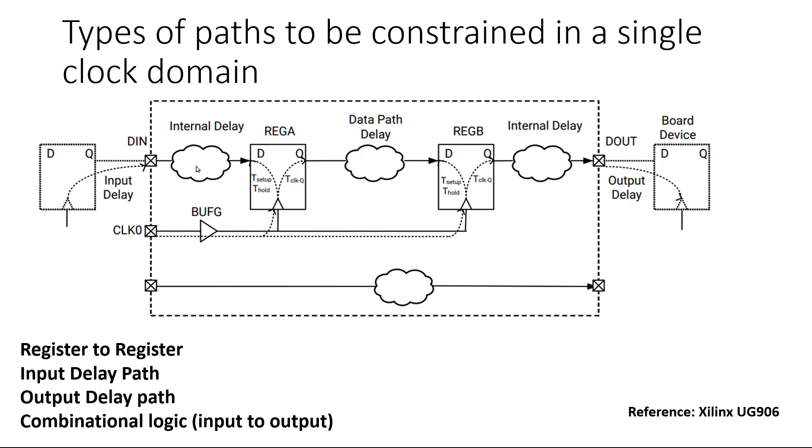Now let us discuss the third type of path that we need to constrain: output delay path. In output delay path, our design gives output to the external world. In this case I have shown only one output D out. It is the output of this flip-flop, let's name it as reg1, and through some combinational logic it is reaching the output port and then reaching the flip-flop hiding inside the other chip.